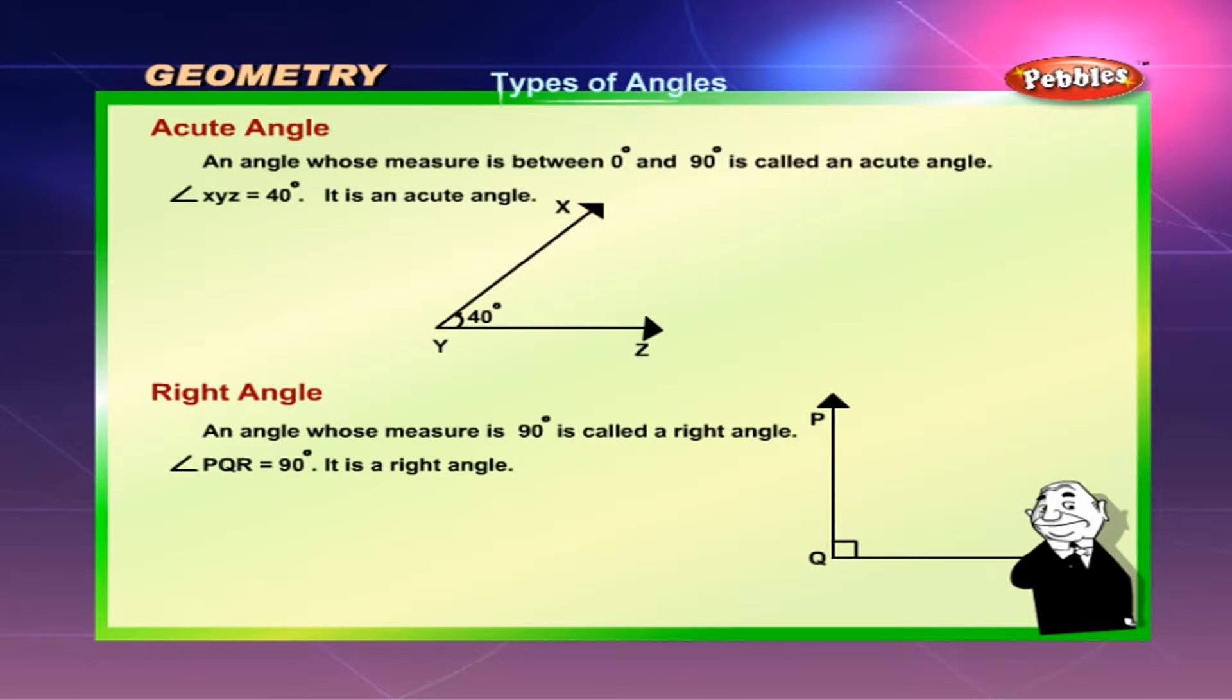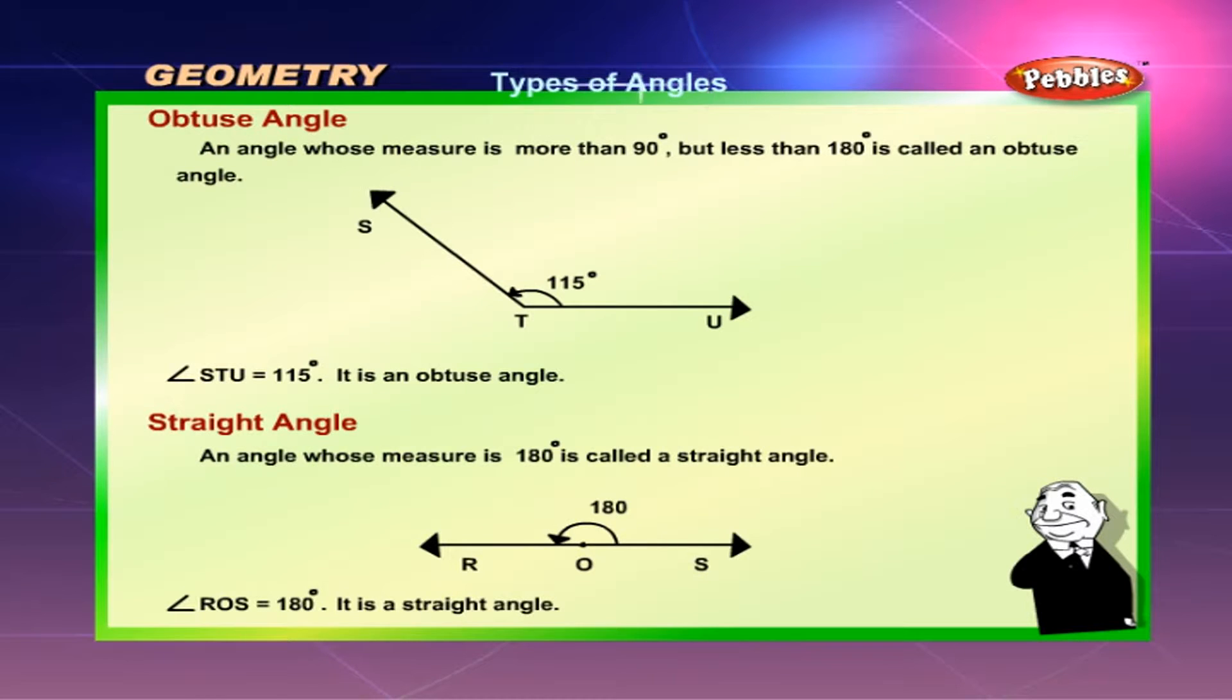An angle whose measure is 90 degrees is called a right angle. An angle whose measure is more than 90 degrees but less than 180 degrees is called an obtuse angle. Angle STU is equal to 115 degrees. It is an obtuse angle.